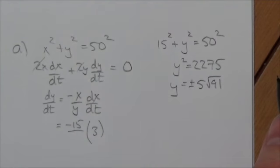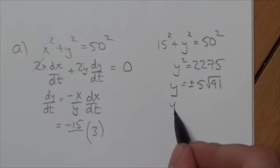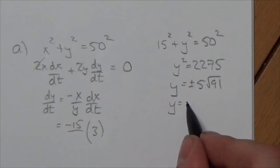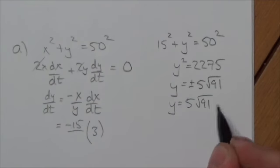So this looks like it's going to be plus or minus 5 root 91. I'm just going to double check that. 5 squared times 91. Does that work? Yes, it does. 2,275. Good. I know here that it can't be the negative. So this has got to be 5 root 91.